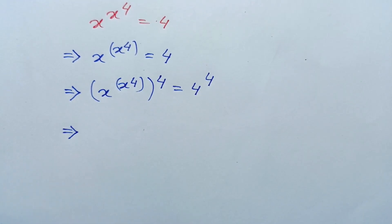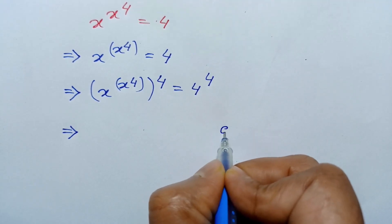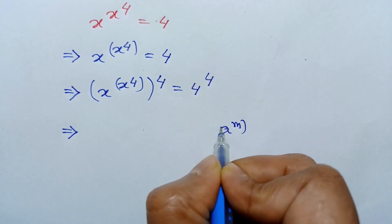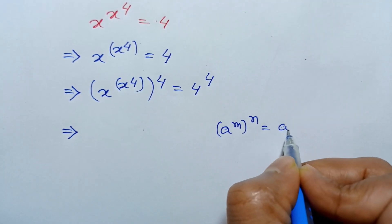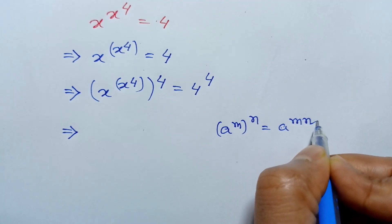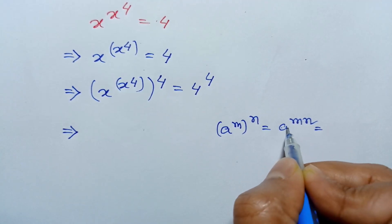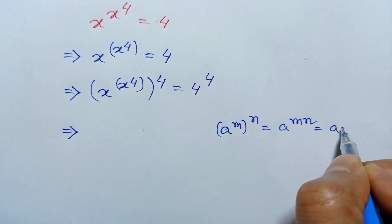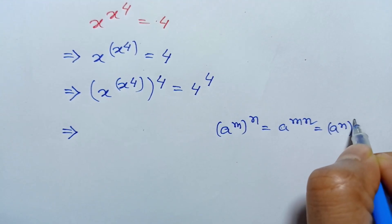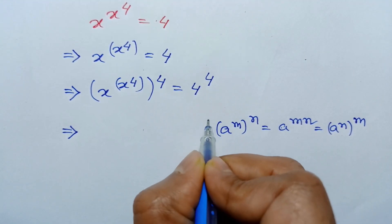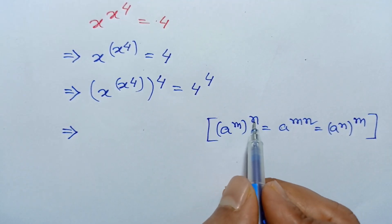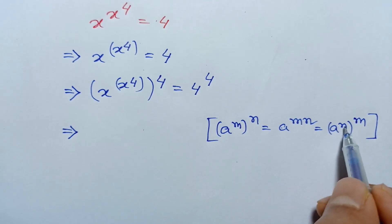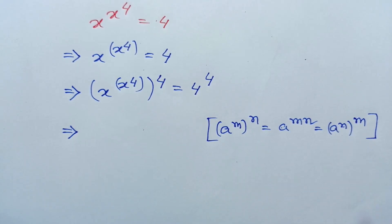Applying the exponential formula: when a to the power m, whole to the power n, it can be written as a to the power mn. Similarly, it can be written as a to the power n, whole to the power m. So a to the power m, whole to the power n, equals a to the power n, whole to the power m.